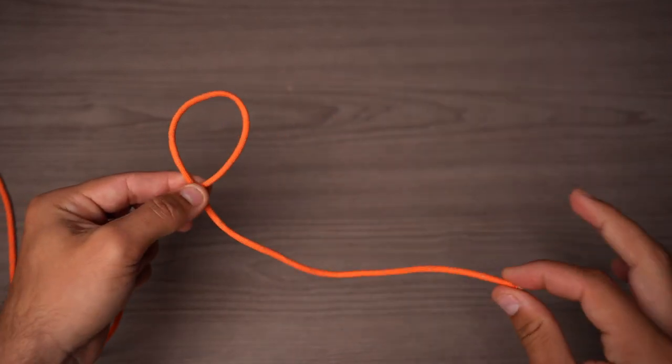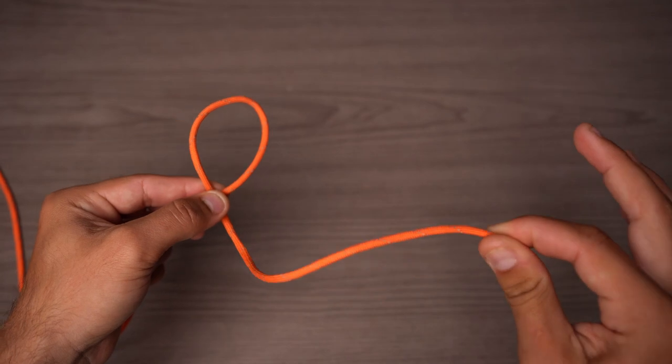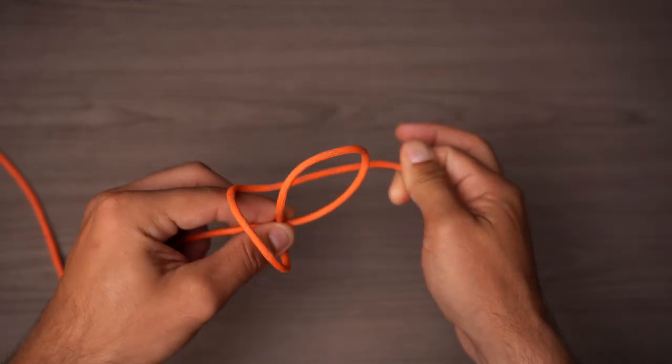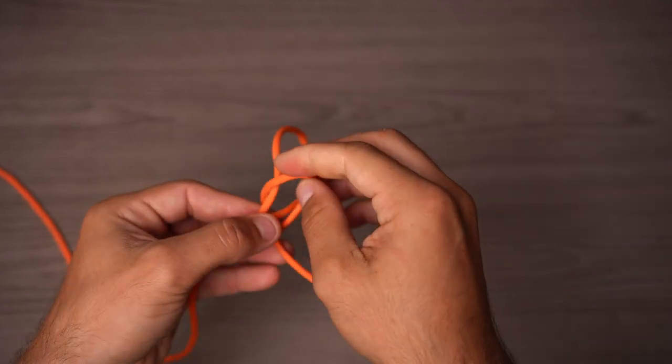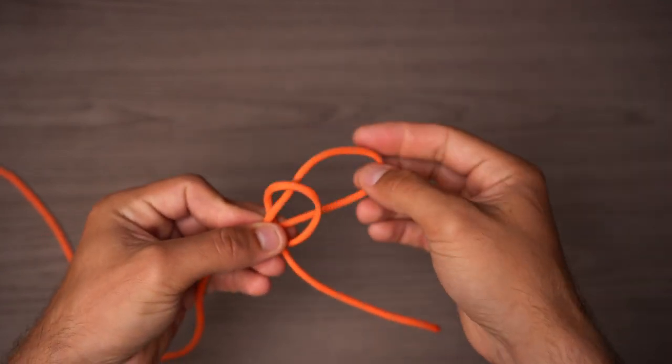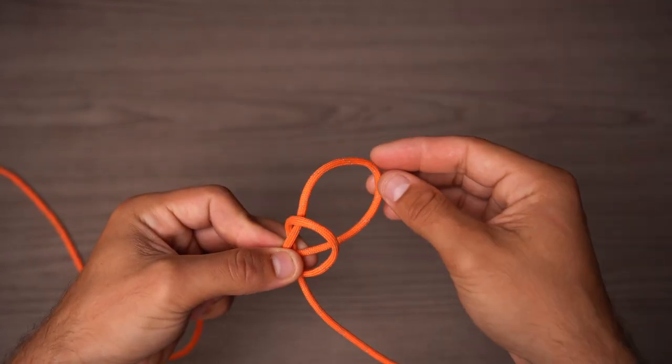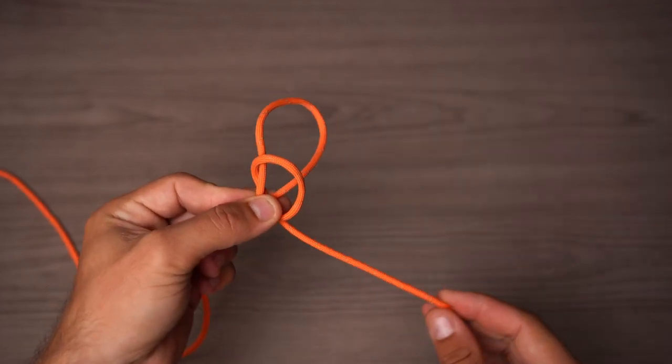We're going to do the same exact thing. We're going to form another loop just by pinching and twisting. This time we're going to go behind the loop, and then put everything in our hand nice and properly. So now you have the first loop you made, you have the second loop you made, and the tag end.